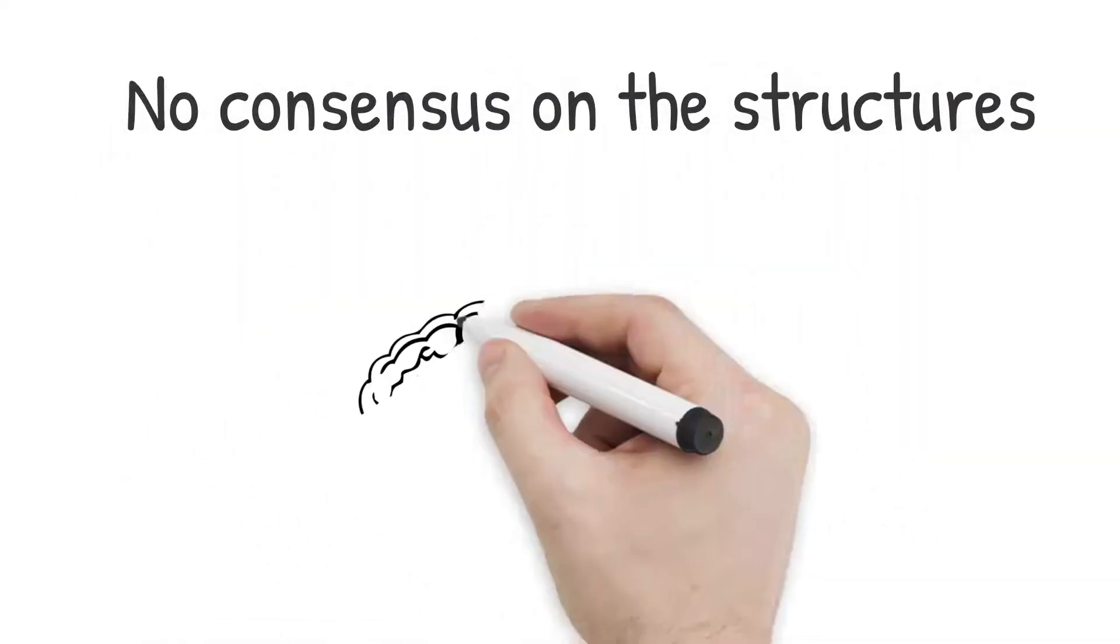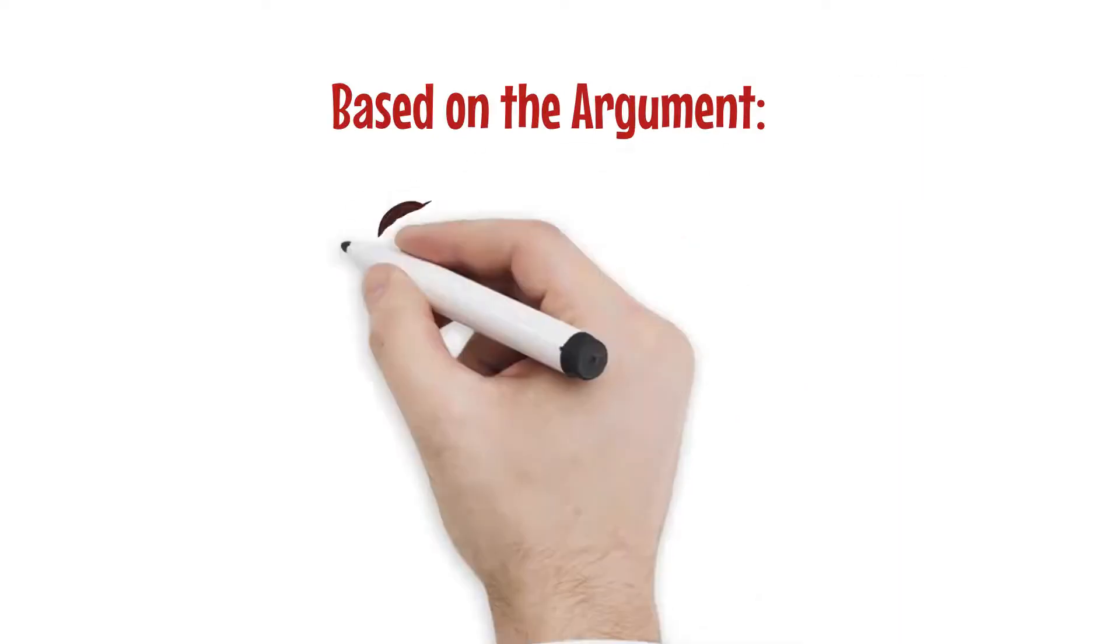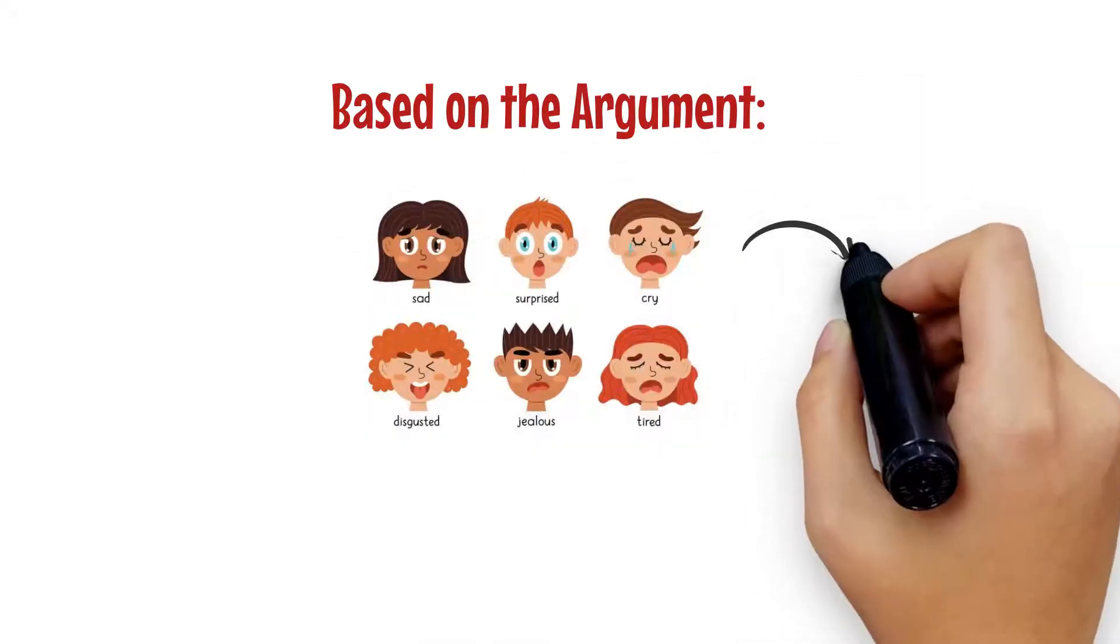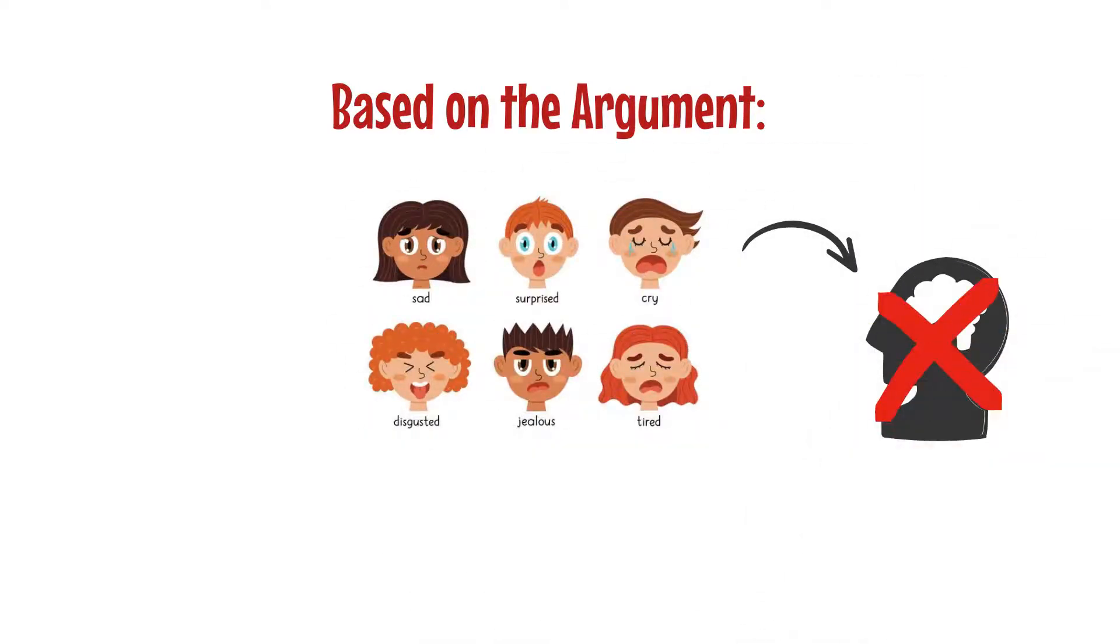There is no consensus on the structures that are part of the limbic system, based on the argument that something as complex as emotions cannot be confined to a handful of brain structures. Regardless, here are a few of them that are often included.